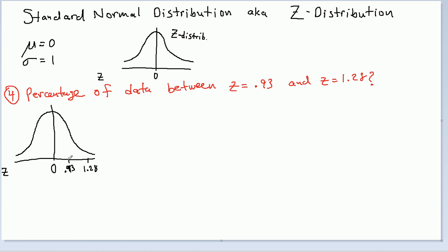Here's positive 0.93 and here is 1.28. So we're asking for the area between these two, the percentage of data between these two values. Let me use green. So how to break this down. This is no longer a tail, nor is it a body probability. This is something that falls kind of in between.